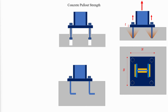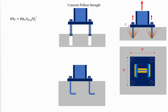ACI concrete pull-out strength is based on the ACI Appendix D provisions. The resistance factor phi is equal to 0.7. PSI-4 is 1.4 if the anchor is located in a region of a concrete member where analysis indicates no cracking at service levels; otherwise it is equal to 1. ABRG is the bearing area of the anchor rod head or nut.